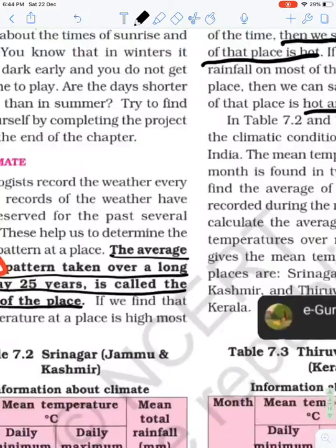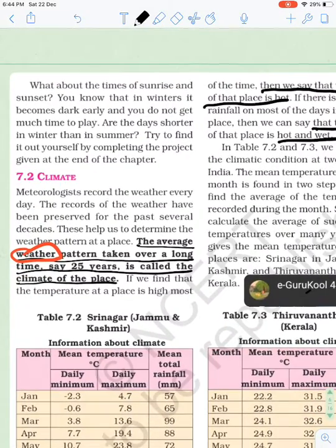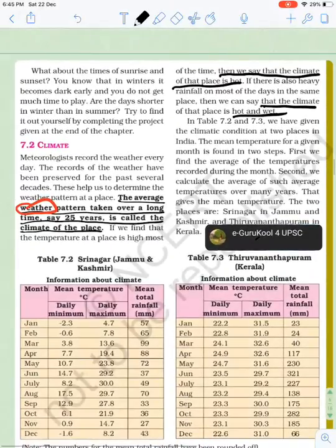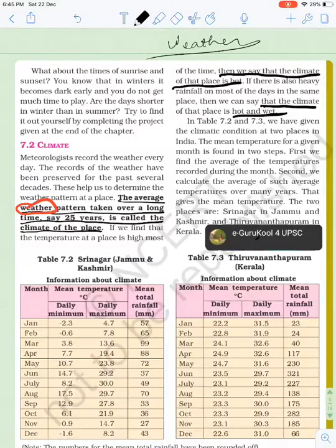Next is climate. The difference between climate and weather should be clear to you, otherwise it will be confusing. Weather is a day-to-day changing phenomena, while climate is the average weather pattern taken over a long time, say 25 years. We take the average weather pattern for about the last 25 years.